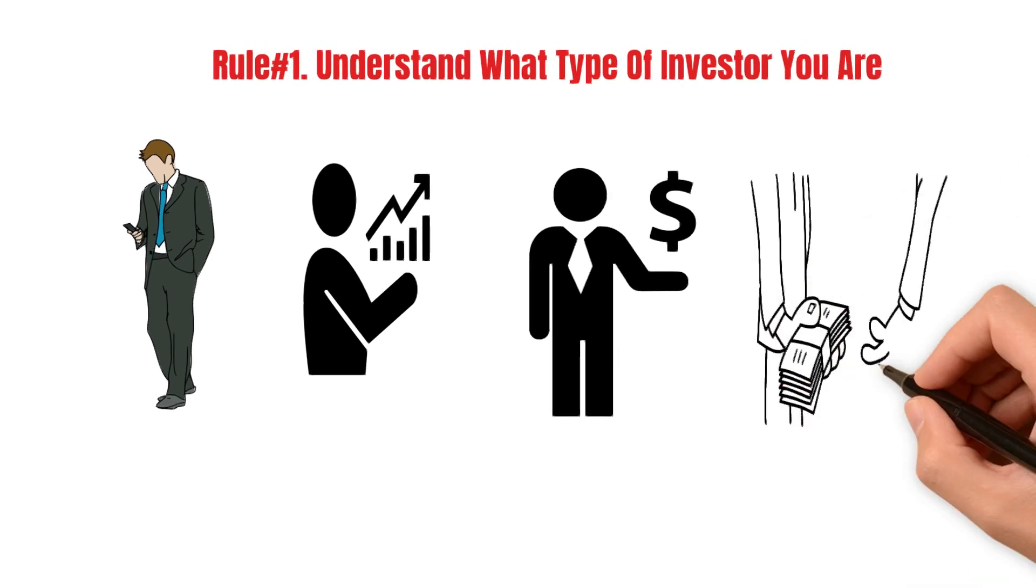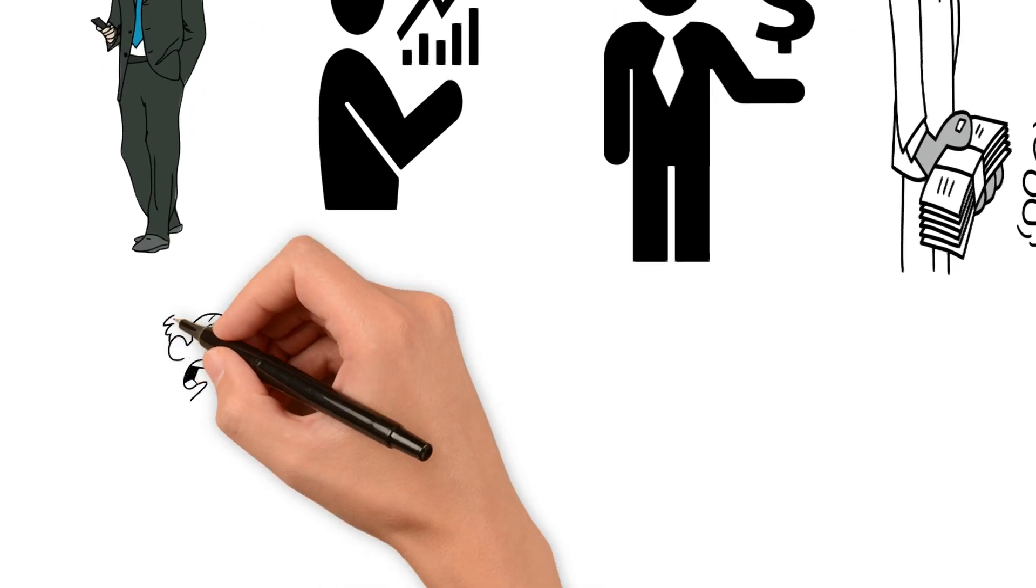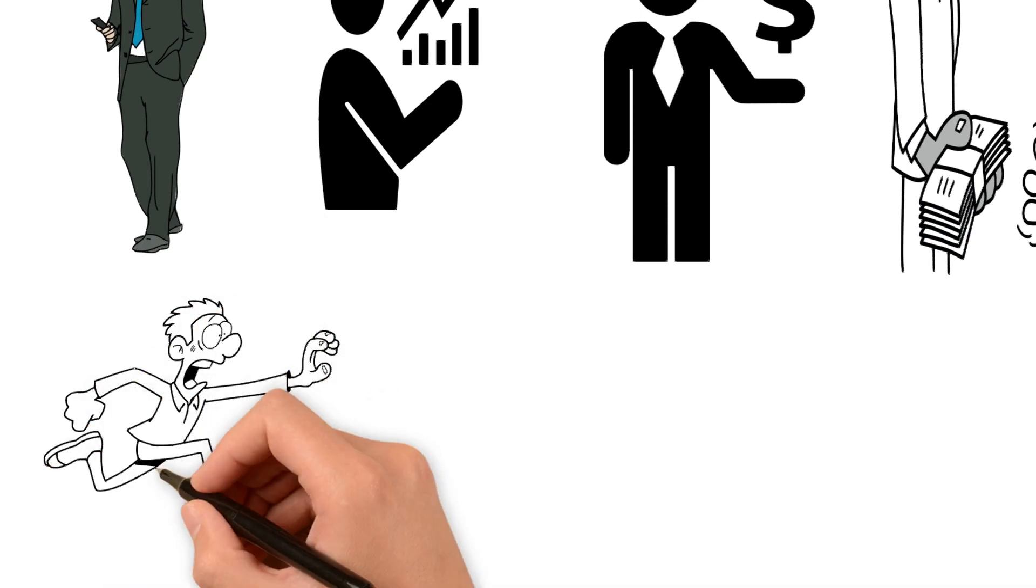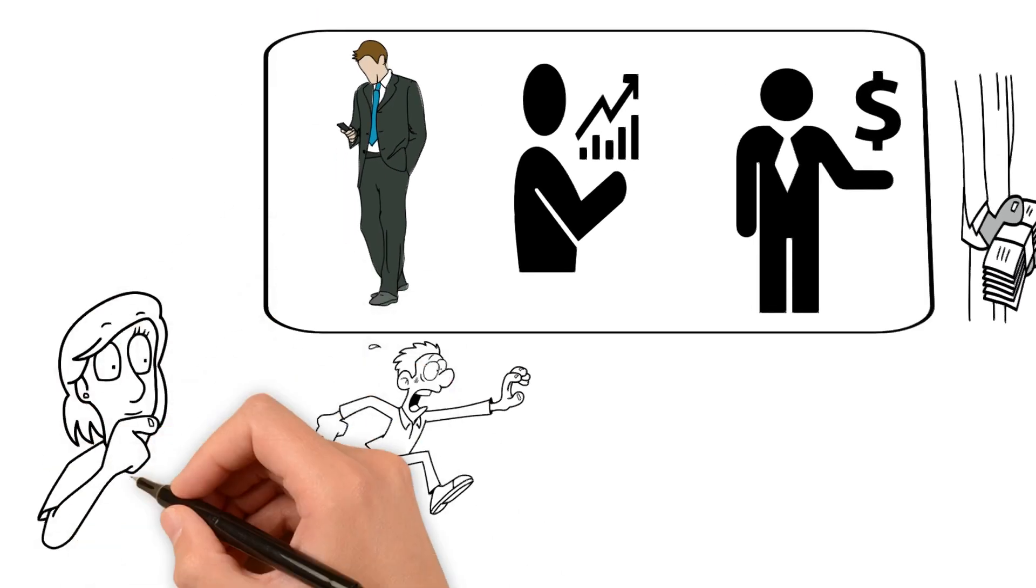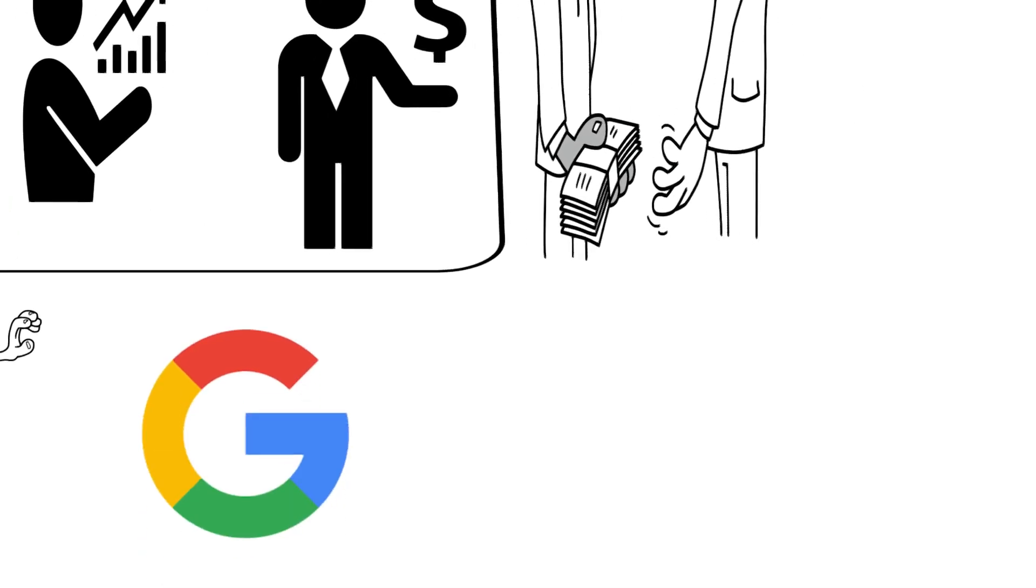They all want to achieve different rates of return, take different levels of risk, and their approach vastly varies from one another. Let's understand how they are different in terms of their approach with an example. Google is one of the best companies in the world. Its stock prices have risen by more than 240% in the last 5 years.